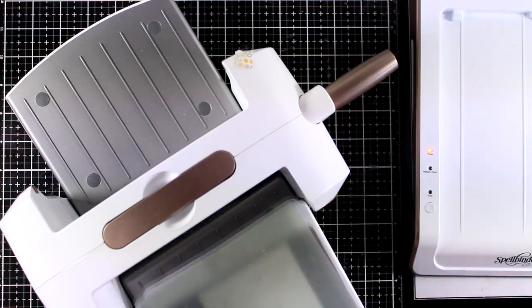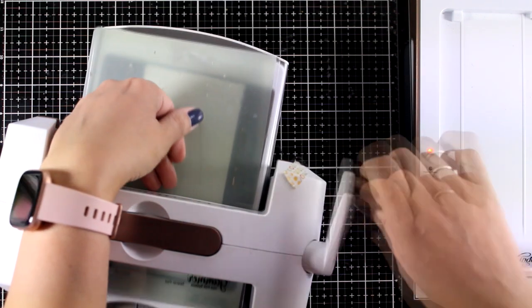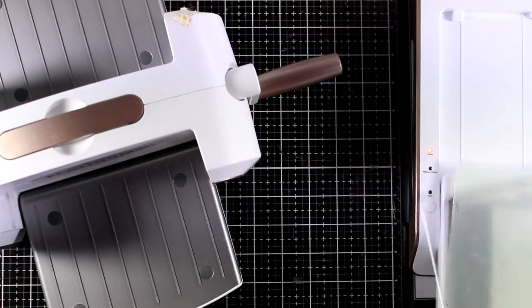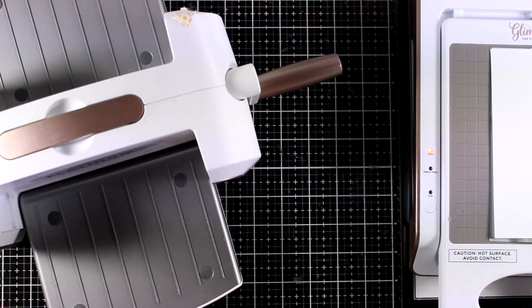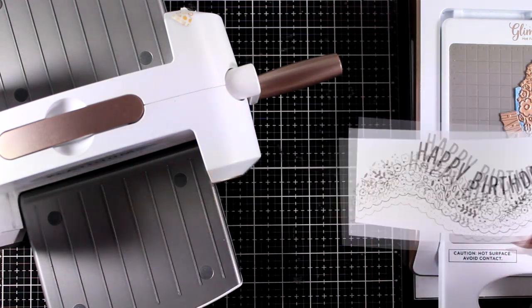So once the light stops blinking I'm going to run the whole sandwich through my die-cutting machine. I just like to do that a couple of times and the truth is that when I have this machine out on my desk I do more than the foiling that I show you in the video so that I have more pieces for other cards.